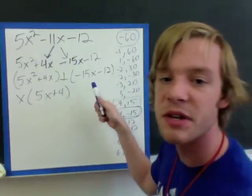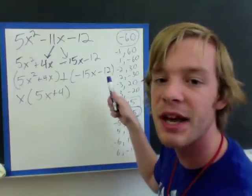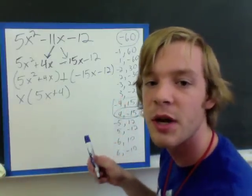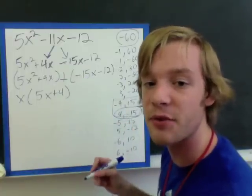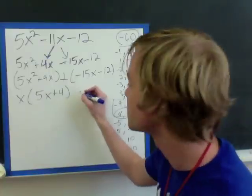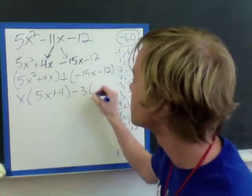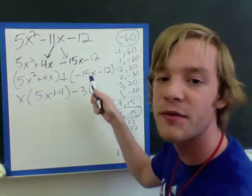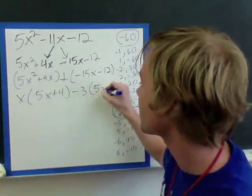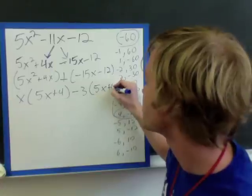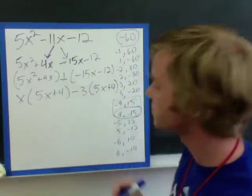With this second parentheses here, I can divide both 15 and 12 by 3, but since both of these are negative, I'm actually going to factor out a negative 3. So I'm going to write minus 3 here, and when I do that, 15 divided by 3 is 5x plus 4, like that.